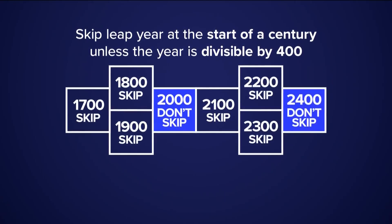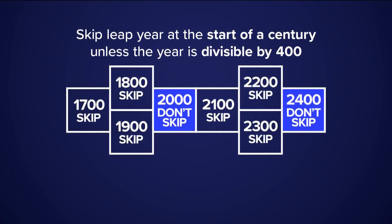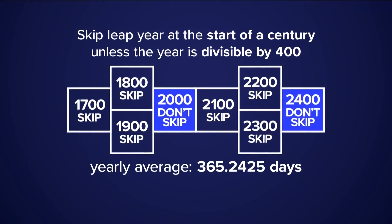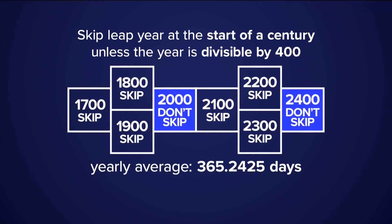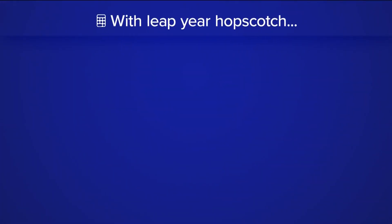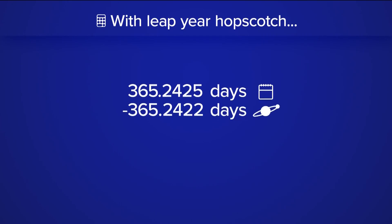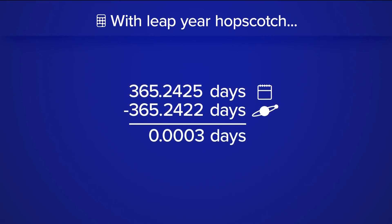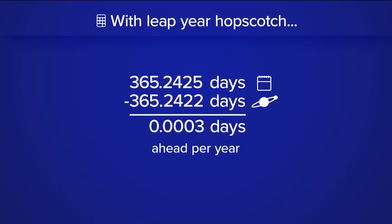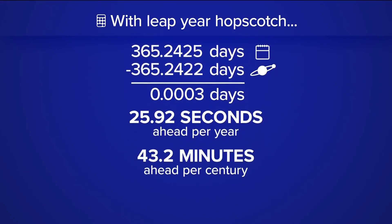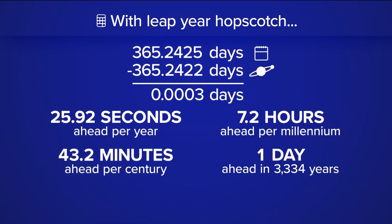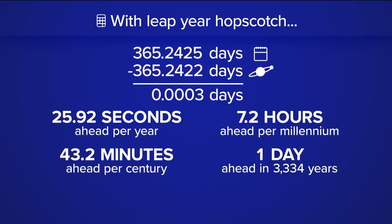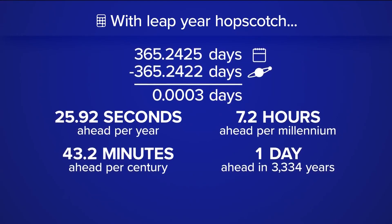This is easy to understand. With this added solution, the current average is 365.2425, which is a lot closer to the solar year. But unfortunately, we're still off by decimals — to be exact, about 26 seconds ahead each year. At this rate, it would take over 3,000 years to be off by one day, which some would say is close enough.